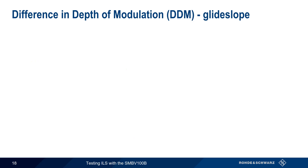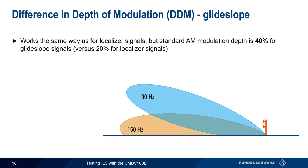Glide slope is also analogous to localizer when it comes to difference in depth of modulation, but with one important difference. The standard AM modulation depth along the glide slope is 40% for each lobe, as opposed to the 20% standard modulation depth used in localizers. The formula for DDM is, however, the same in both cases.